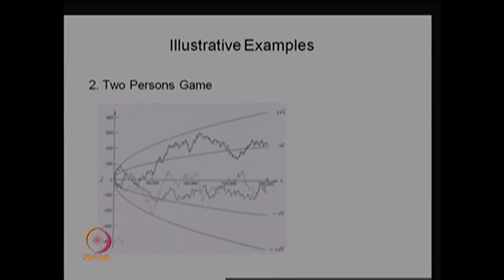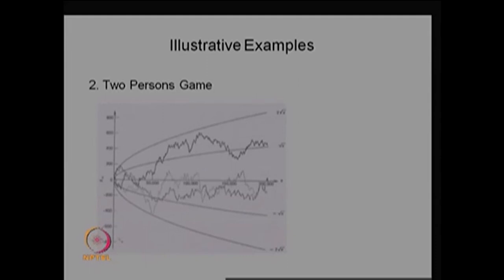As n grows large, the dynamics of Sn keep changing over time, giving different realizations. Three different realizations are shown, from the book 'Elements of Applied Stochastic Processes.' Our interest is: what is the distribution of Sn at any n, and as n tends to infinity, what is the limiting distribution of Sn? If we know the distribution, we can obtain all moments for different n as well as the asymptotic behavior of the random variable Sn.